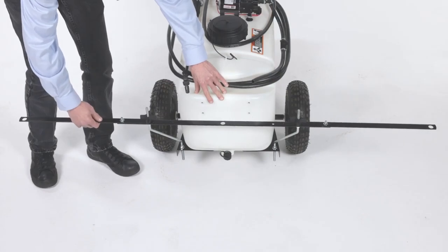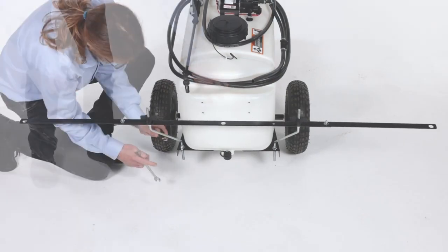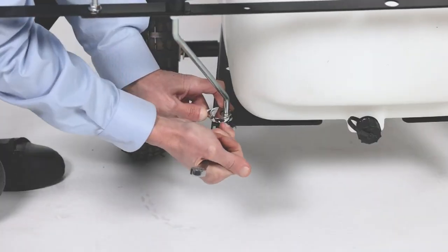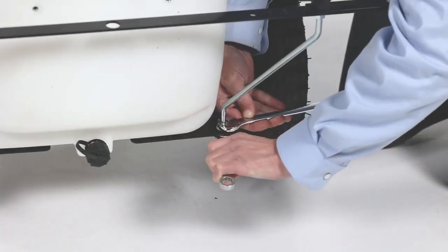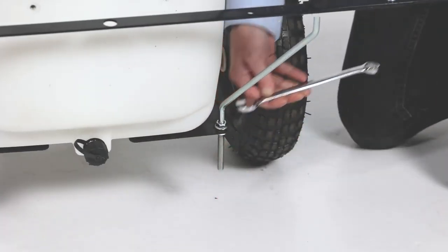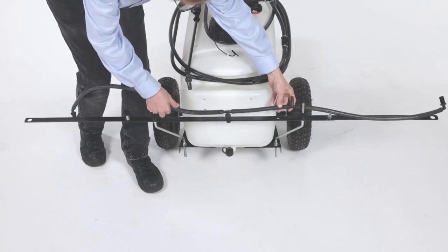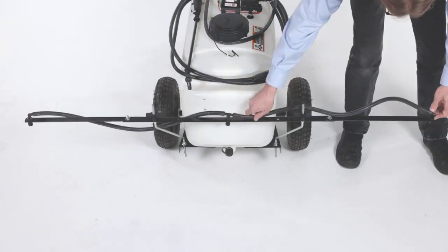Now align the boom hose assembly, and secure it with 3 nozzle retaining nuts, Part J.